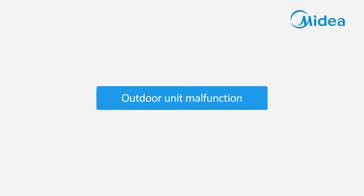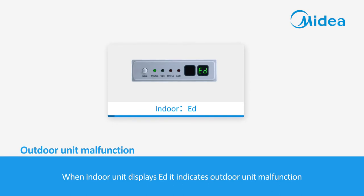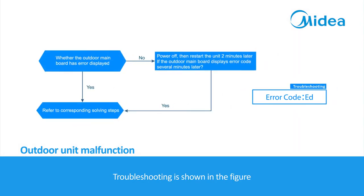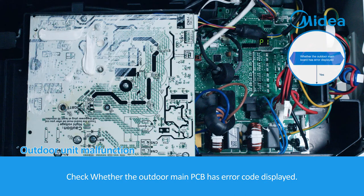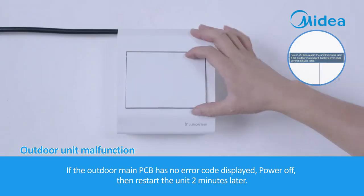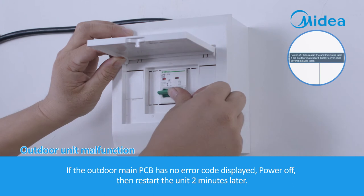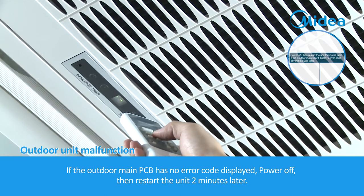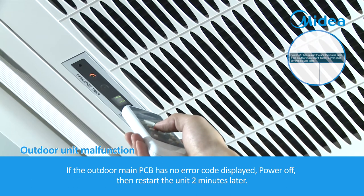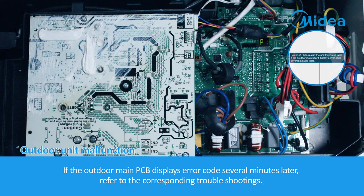Outdoor unit malfunction. When the indoor unit displays ED, it indicates an outdoor unit malfunction. Troubleshooting: check whether the outdoor main PCB has an error code displayed. If no error code is displayed, power off, then restart the unit 2 minutes later. If the outdoor main PCB displays an error code several minutes later, refer to the corresponding troubleshooting procedures.